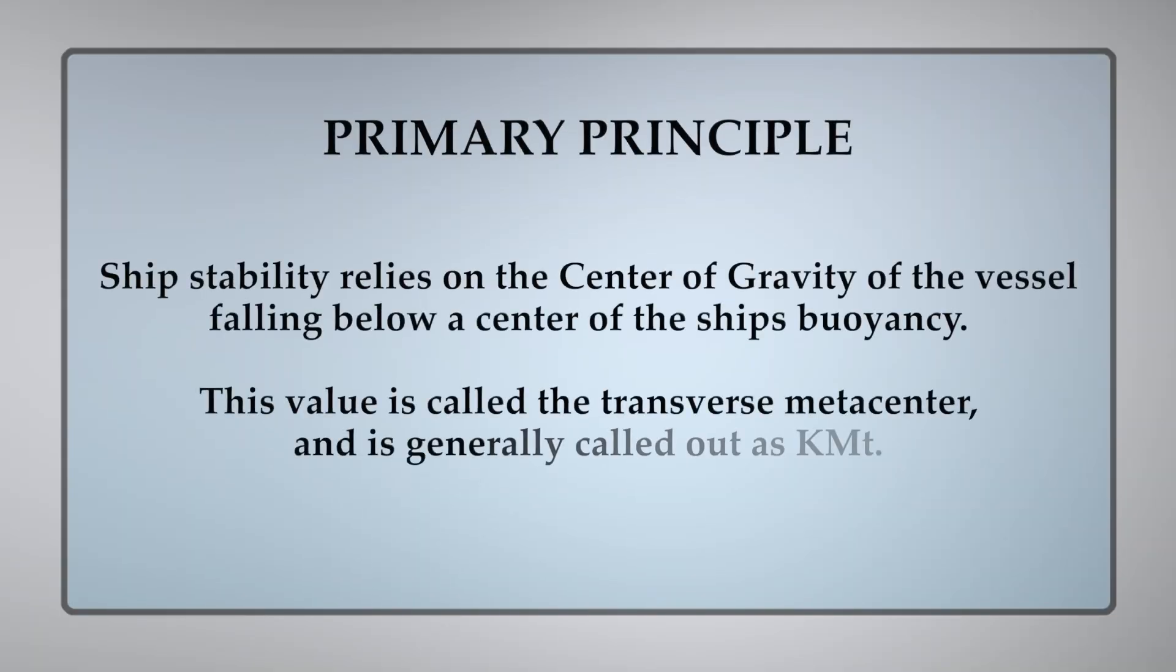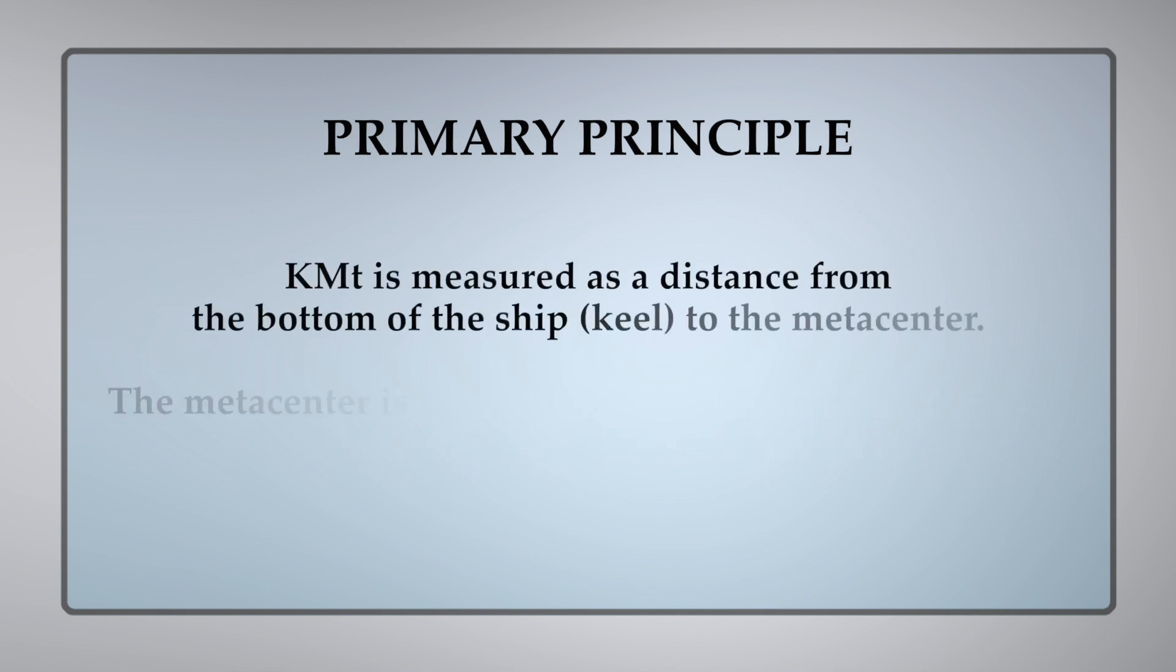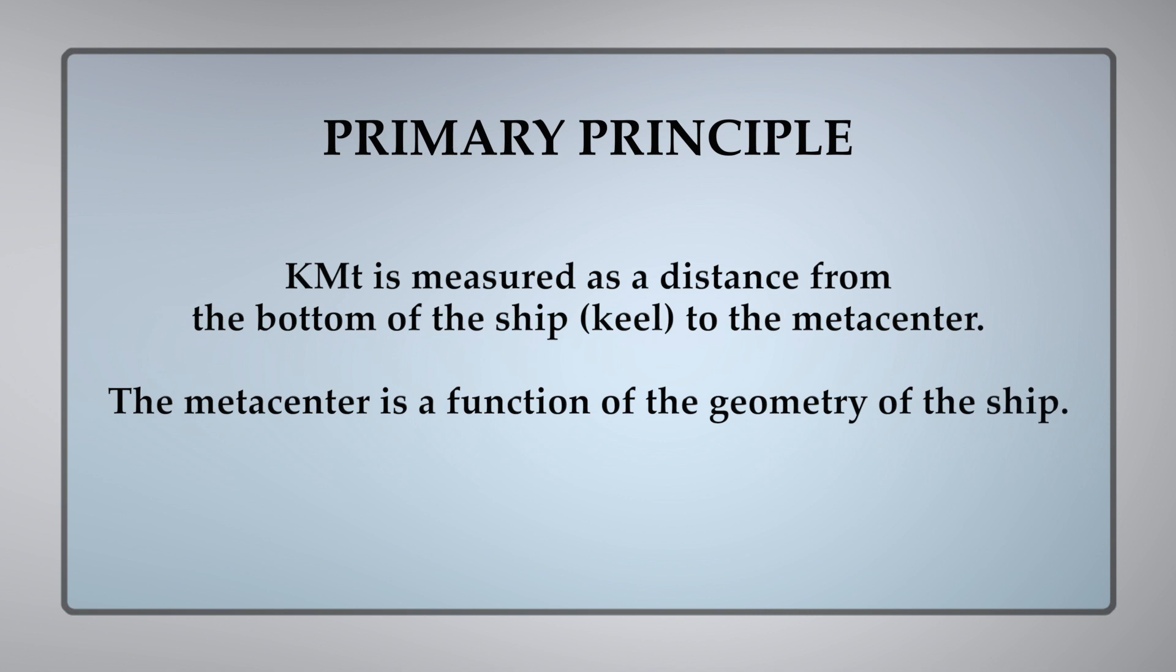The primary principle is that the ship's stability relies on the center of gravity and the vessel falling below the center of the ship's buoyancy. This value is called the transverse metacenter and is generally called out as KMT. KMT is measured as the distance from the bottom of the ship to the metacenter. The metacenter is a function of the geometry of the ship.